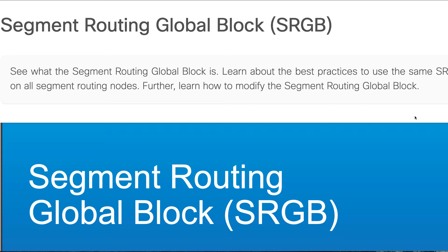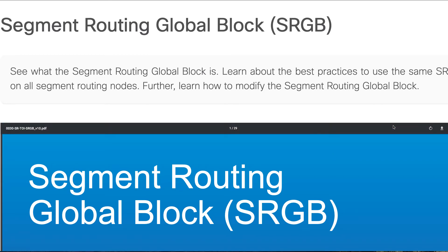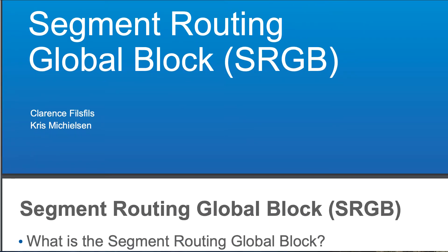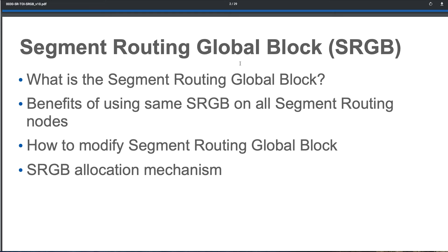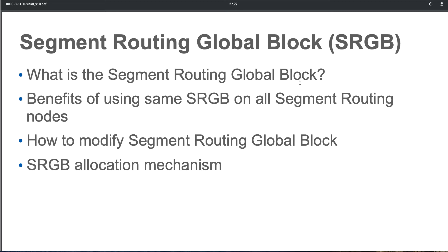So around the same topic, we'll explore this in a little bit more detail. The material I'm referencing you can download or view online at segment-routing.net, and all the credit goes to those guys. Let's take a look at what is segment routing global block in more detail — what sRGB stands for, the benefits of using the same sRGB on all nodes, how to modify it, and the sRGB allocation mechanism.